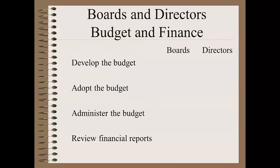Now let's look at the roles of library boards and library directors, starting with budget and finance. Boards and library directors work together to develop the budget, but boards have the responsibility of adopting a budget. Administering the budget falls to the director — within the constraints of the budget, the director is given authority to make expenditures without additional board authorization, except perhaps for a policy that orders for a single item exceeding a certain cost — $2,000 might be a good breaking point — should be brought to the board. Both the board and the director should review regular financial reports to see how the library is doing compared to what was budgeted for both revenues and expenditures.